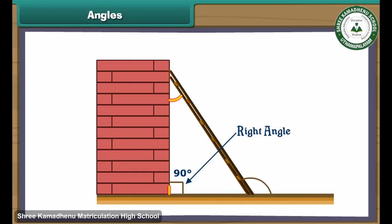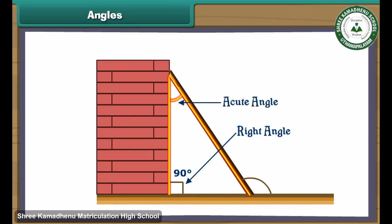Now consider the angle that the ladder makes with the wall. We take the wall as the base. The ladder is not vertical — it is tilted in. Such an angle is called an acute angle and its measure is less than 90 degrees.